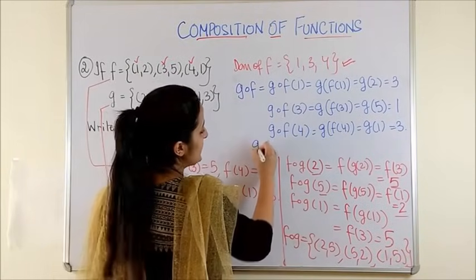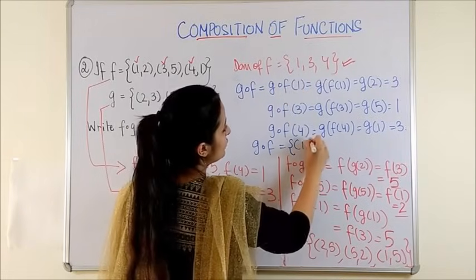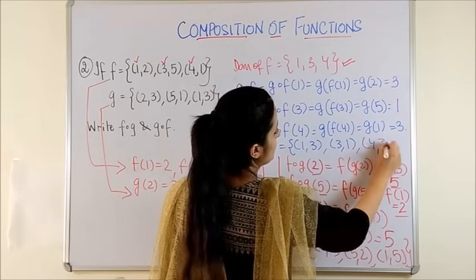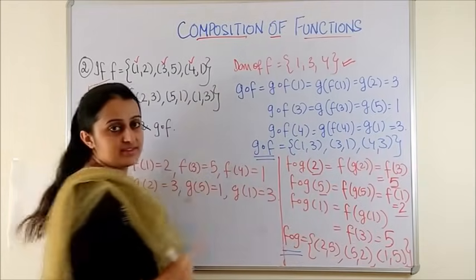And thus, we say G of F gives us the ordered pairs which are 1, 3, 3, 1, 4, 3. So these are the answers.